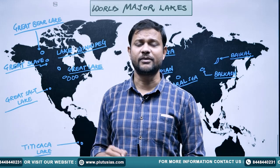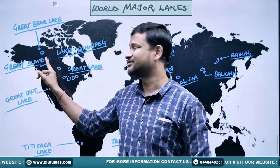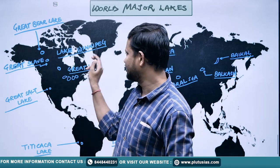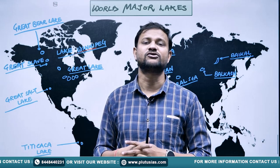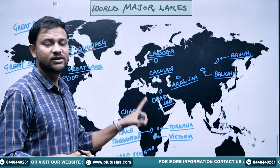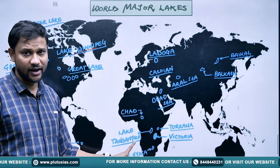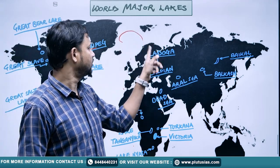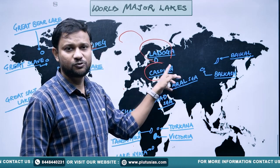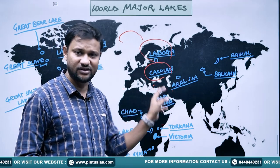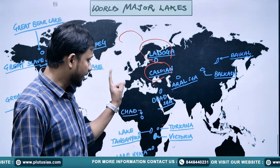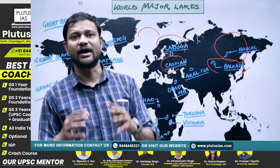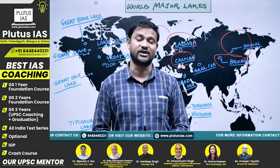To recap: in North America — Great Bear Lake, Great Slave Lake, Great Salt Lake, the Great Lakes system, and Lake Winnipeg. Lake Titicaca in South America is the largest. In Africa: Chad, Tanganyika, Nyasa, Victoria, and Turkana. In Europe, Ladoga is the largest. Then Caspian Sea, Black Sea, Aral Sea, and Dead Sea are also considered lake bodies. Then Balkash Lake, and further east, Lake Baikal — the largest and most voluminous lake on the earth's surface.